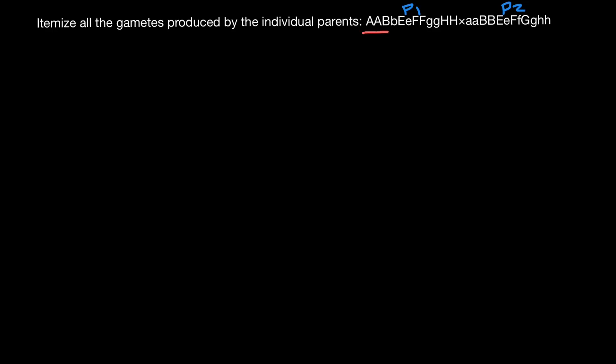Parent one is homozygous dominant for gene A, and parent two is homozygous recessive for gene A. That means the F1 generation for gene A is going to be heterozygous 100%. No other variants are possible, because parent one can only give the dominant allele and parent two can only give the recessive allele. So only the dominant and recessive allele combination is possible in the F1 generation for gene A.